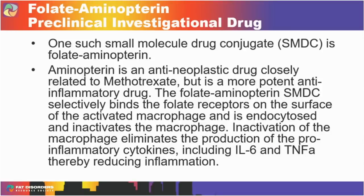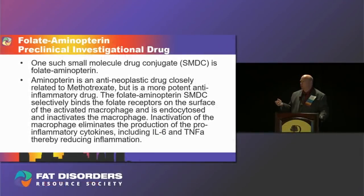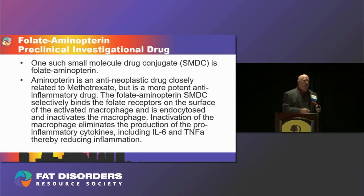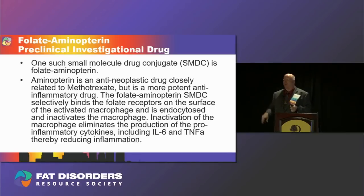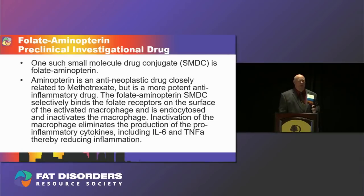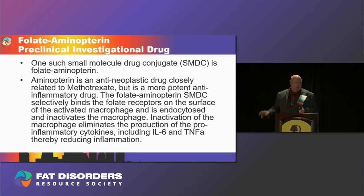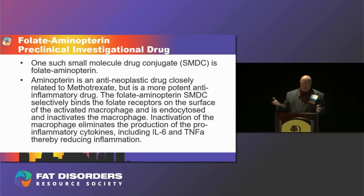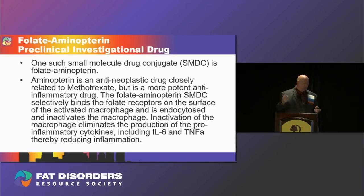Importantly, normal healthy cells acquire folate via the reduced folate carrier, and this drug cannot enter normal healthy cells because it cannot pass through that reduced folate carrier. So the drug bypasses all normal cells, goes where it's supposed to go, and does what it's supposed to do — it doesn't cause unwanted effects elsewhere. The result is less toxicity and fewer side effects.